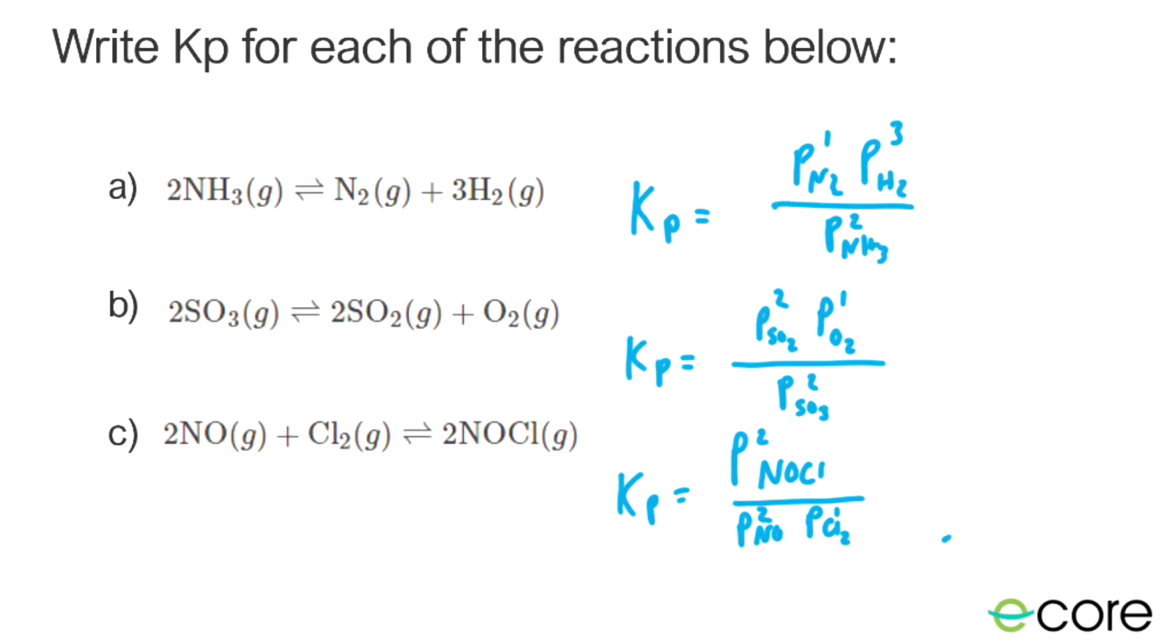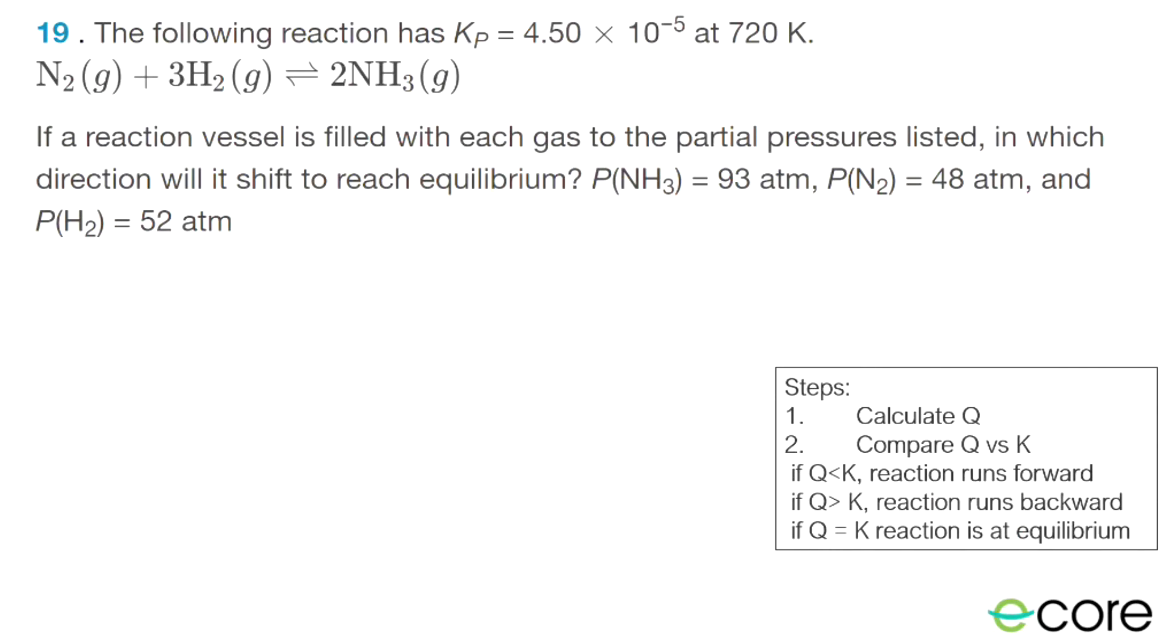Okay, last thing we're going to do is we're going to practice this to see if a chemical reaction is at equilibrium or not. So this says the following reaction has a Kp of 4.5 times 10 to the minus 5. That means we have a pretty small Kp, right? 10 to the negative 5 is much, much less than 1, and so that means it's going to favor reactants. Recall that small Ks favor reactants and big Ks favor products. And it says, if the reaction vessel is filled with each gas to the partial pressures listed below, in which direction will it shift to reach equilibrium? So just like the problems we've done where we compared Q and K. Okay, so how do we do this problem? First, we calculate Q, and then we compare Q versus K. So let's see where we're at in our reaction. Are we before the finish line or after the finish line? For after the finish line, we're going to run backwards, and that's when Q is greater than K. Or if we're before the finish line, that's when Q is less than K, we're going to run forward. So first, let's write down Q and then compute it.